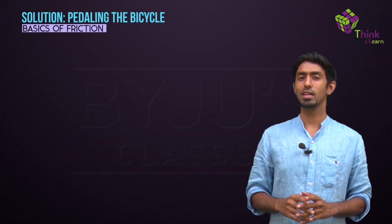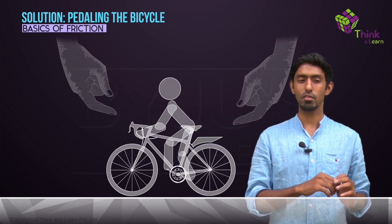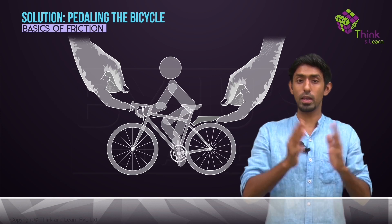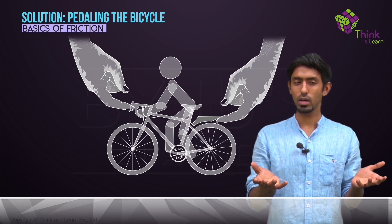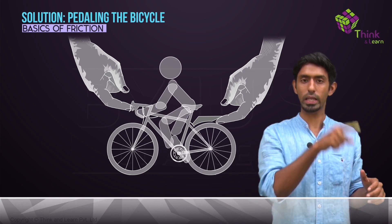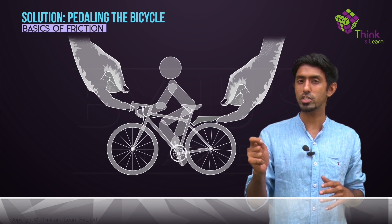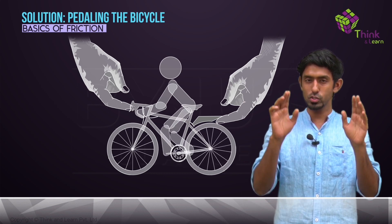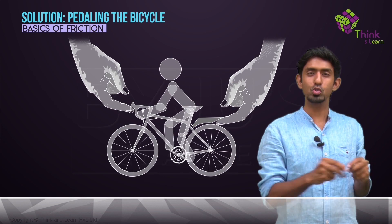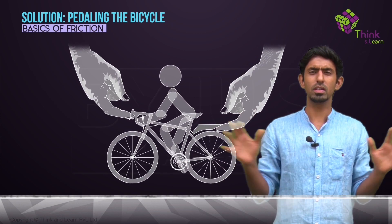To find the answer, let's do something really mischievous. Just when somebody is about to start their cycle, we bring in a giant who lifts the cycle up by the handlebars and seat and lets them pedal — but now the cycle is not in touch with the ground. The back wheel rotates because that's what your legs are doing, but the front wheel will not rotate at all — it will be at rest. Now the giant slowly begins to lower the bicycle, but not before making the road super smooth and slippery and putting a paper on it, so the paper can just move either way very easily.